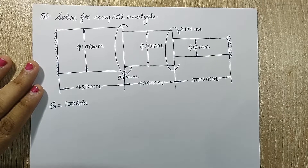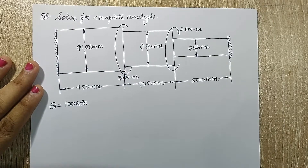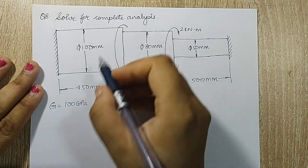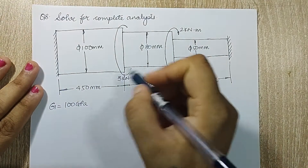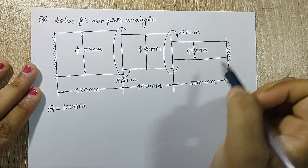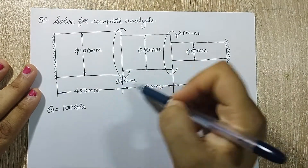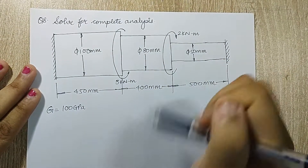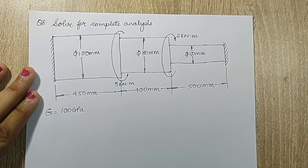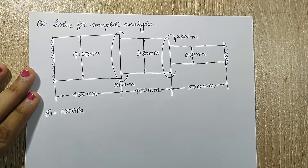Hello everyone, welcome to the next session of Finite Element Analysis. I am solving question 8 - a direct application. This is a step bar with both ends fixed and two torques applied, so this is a problem of torsion.